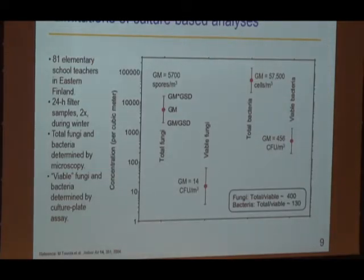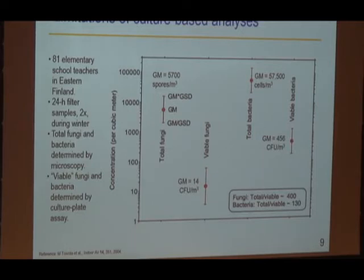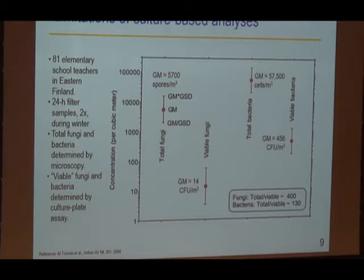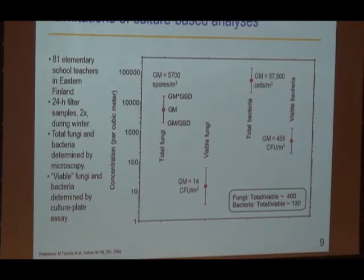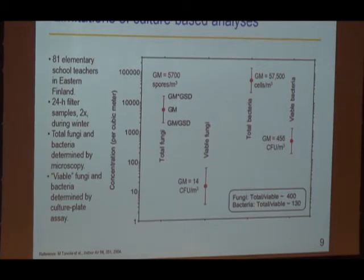Culture-based methods provide only a little peephole into a broad landscape. Evidence from a study in Eastern Finland monitored elementary school teachers with personal, household, and workplace samples, including culturable measurements and microscopic evaluation. The average ratio of total fungi on filters to those that were viable was 400 times—less than 1% of the fungi were viable. For bacteria it was also less than 1%, with 130 times as many bacteria seen by microscopy as by cultivation. The typical bacterial cell concentration was about 60,000 per cubic meter, about 10 times higher than the number of spores.